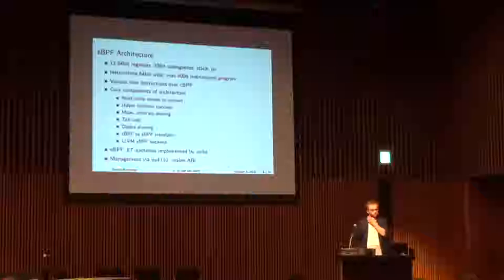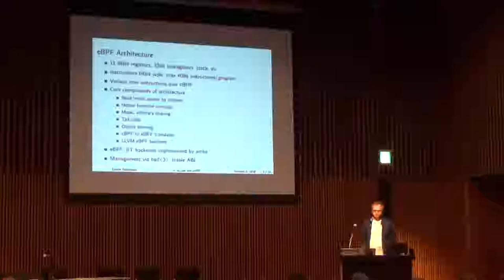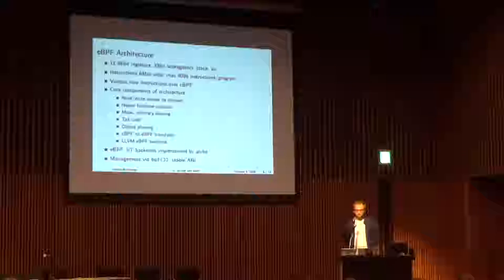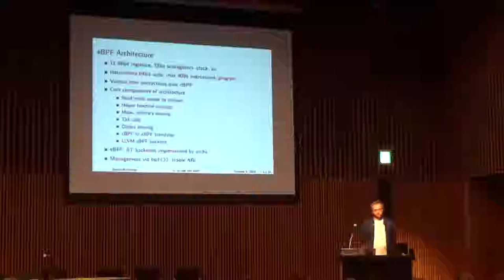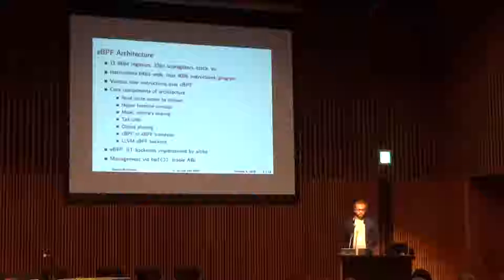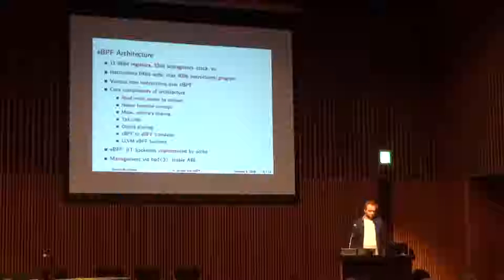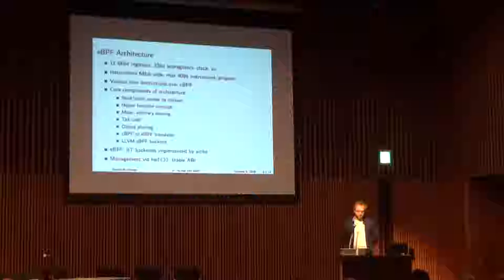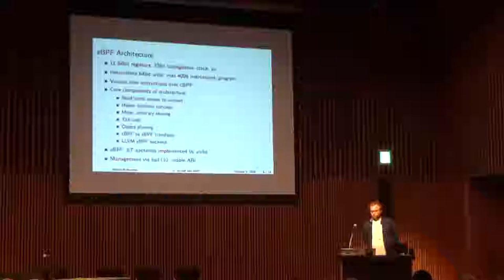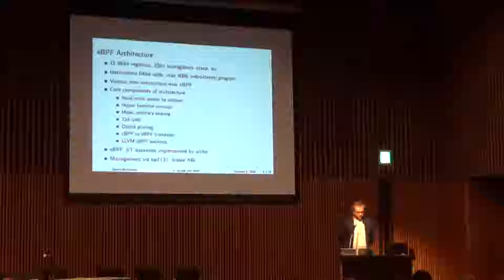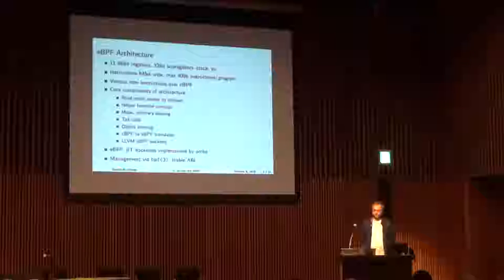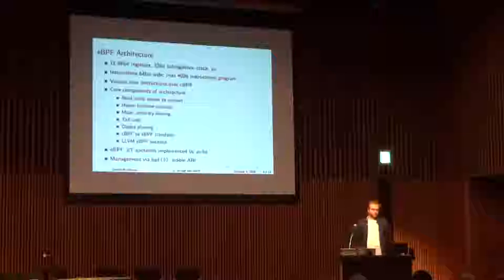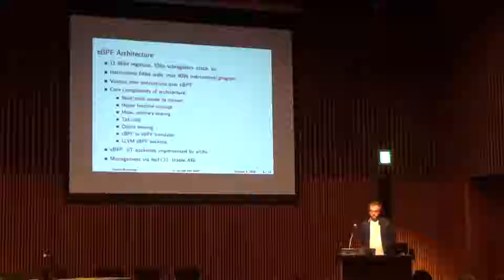Tail calls are a concept where one eBPF program can call into another and redirect execution — it doesn't return back to the previous one, and there's a limit on nesting depth. Then we have object pinning, which is important when TC loads programs into the kernel, since everything from user space is managed over file descriptors. You pin maps to some location so management daemons can access them later. Also, since the kernel no longer has the classic BPF interpreter, it migrates programs like those from tcpdump from classic BPF into eBPF.